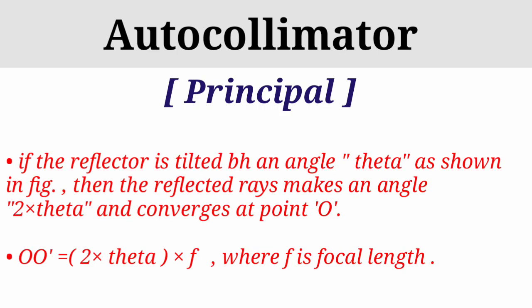So OO-dash is equal to 2-theta into f, where f is the focal length. यहाँ पर f focal length है। यह होता है autocollimator का principle यानि कि सिद्धान्त।